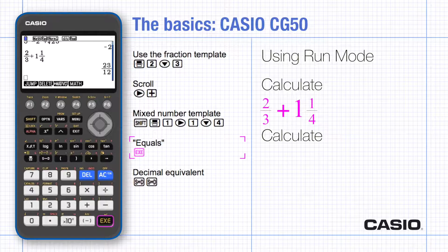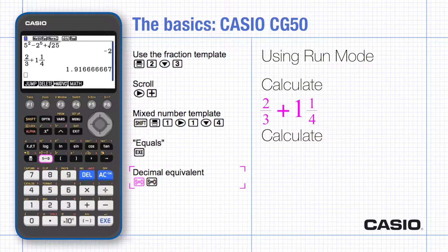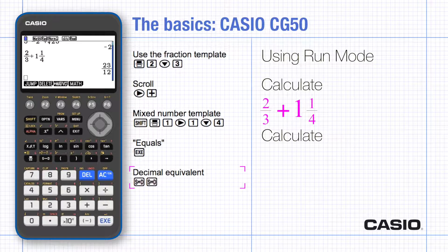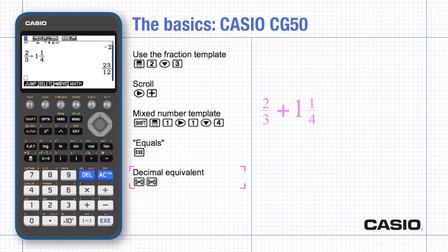If you would prefer to have the answer as a decimal press the sd key. To turn it back into a fraction press the sd key again. Notice the sd key is useful for simplifying even when it's not the answer to a calculation.